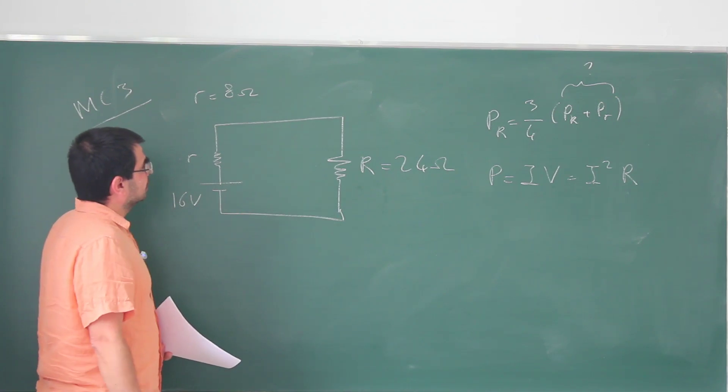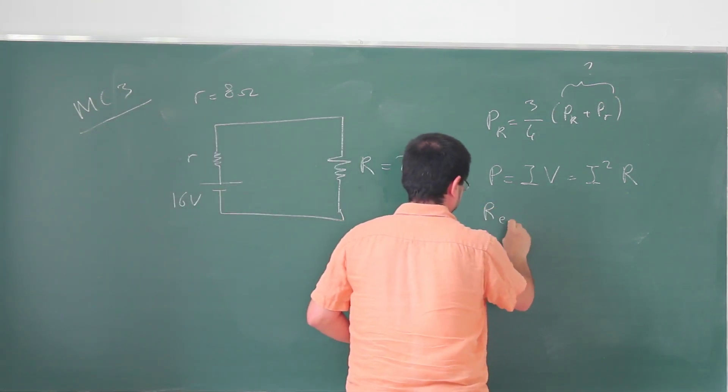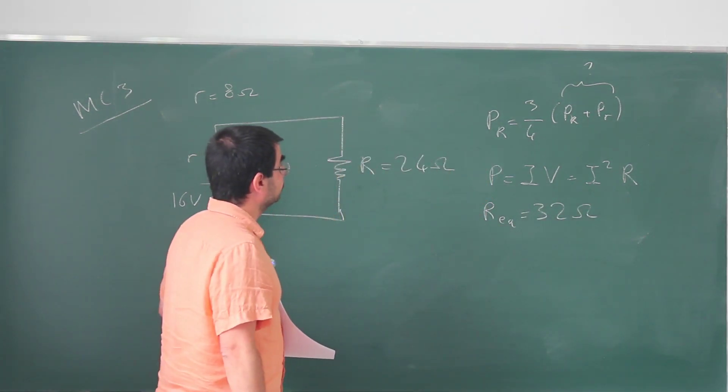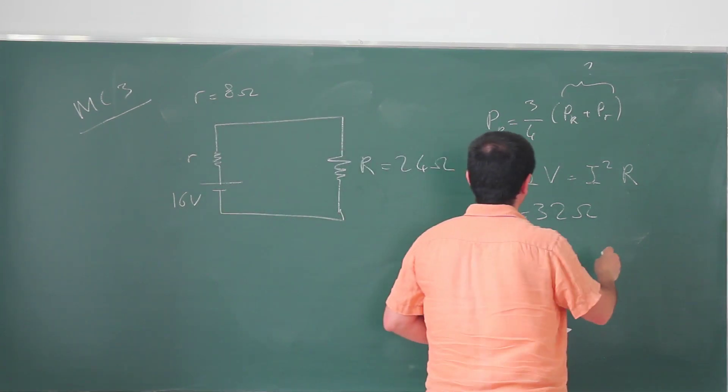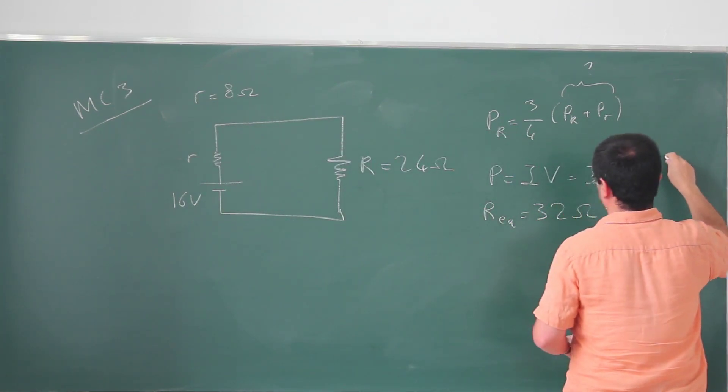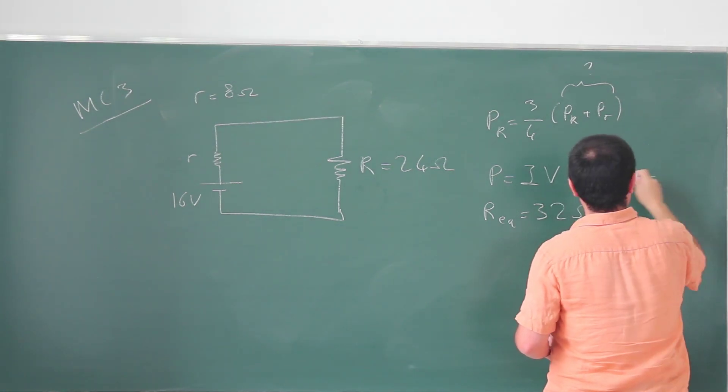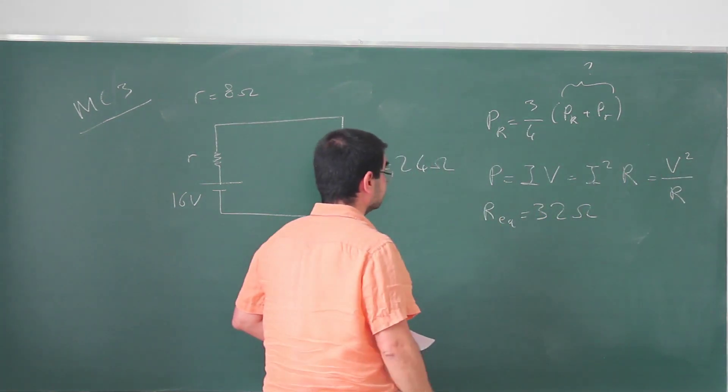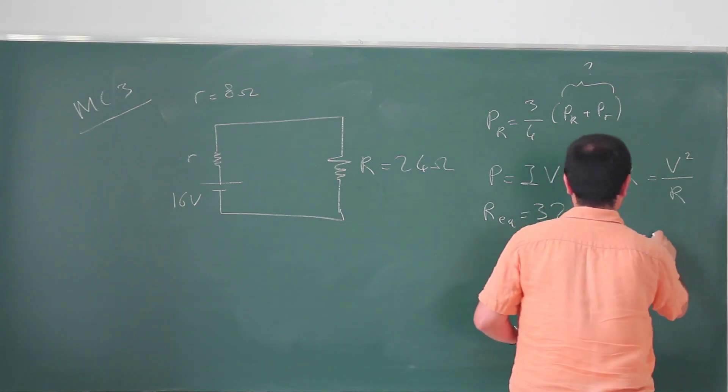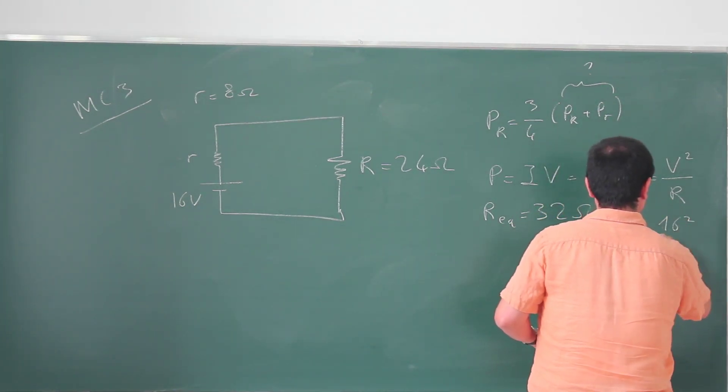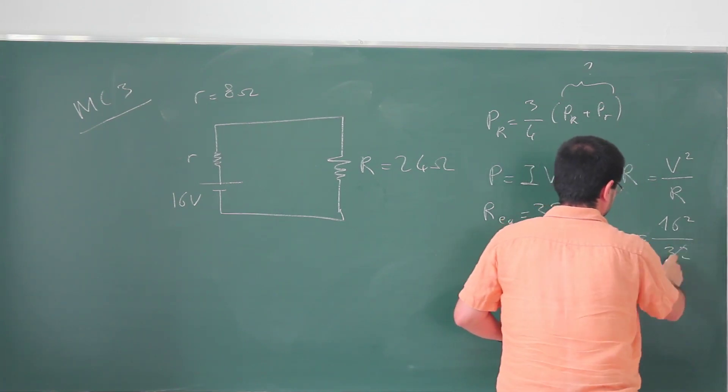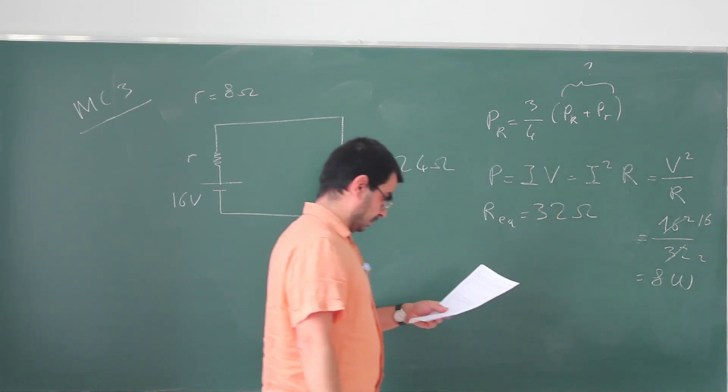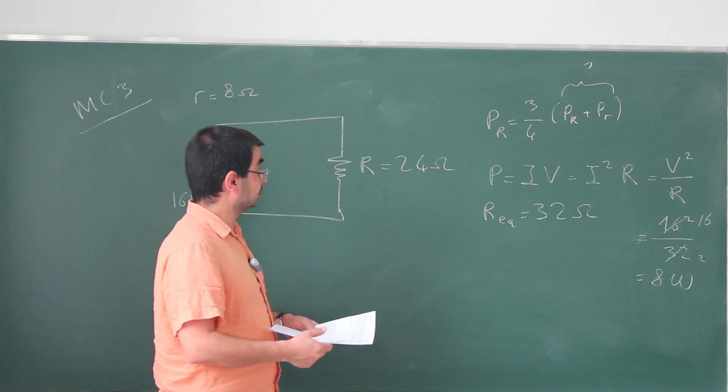Now eight plus 24, our equivalent is going to be 32 ohms. They're asking for the total power, we can also write this as v squared over r. So the total power is going to be 16 squared divided by 32. This is 16, this is 2, this is 8 watts. And that would make it choice E in the answer sheet.